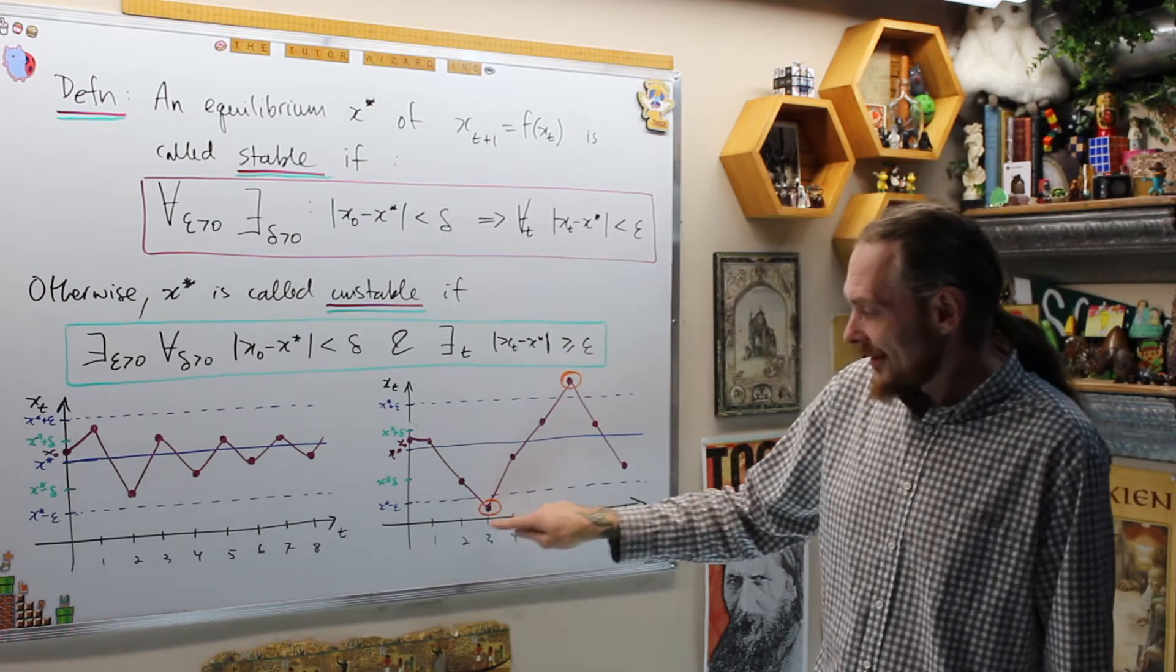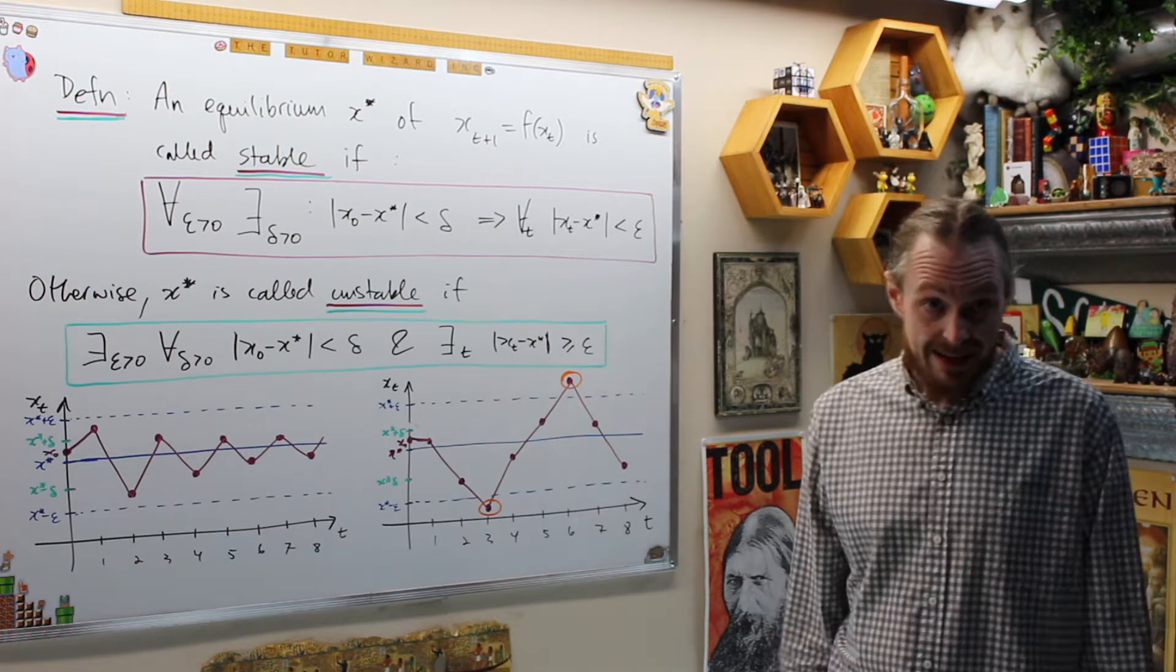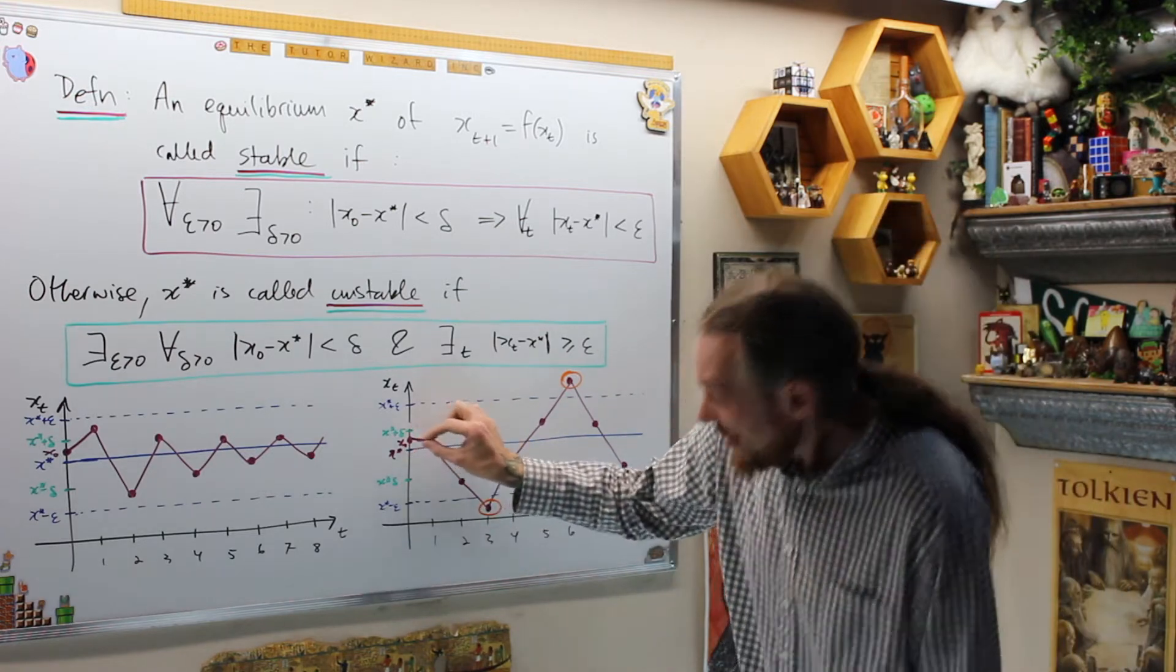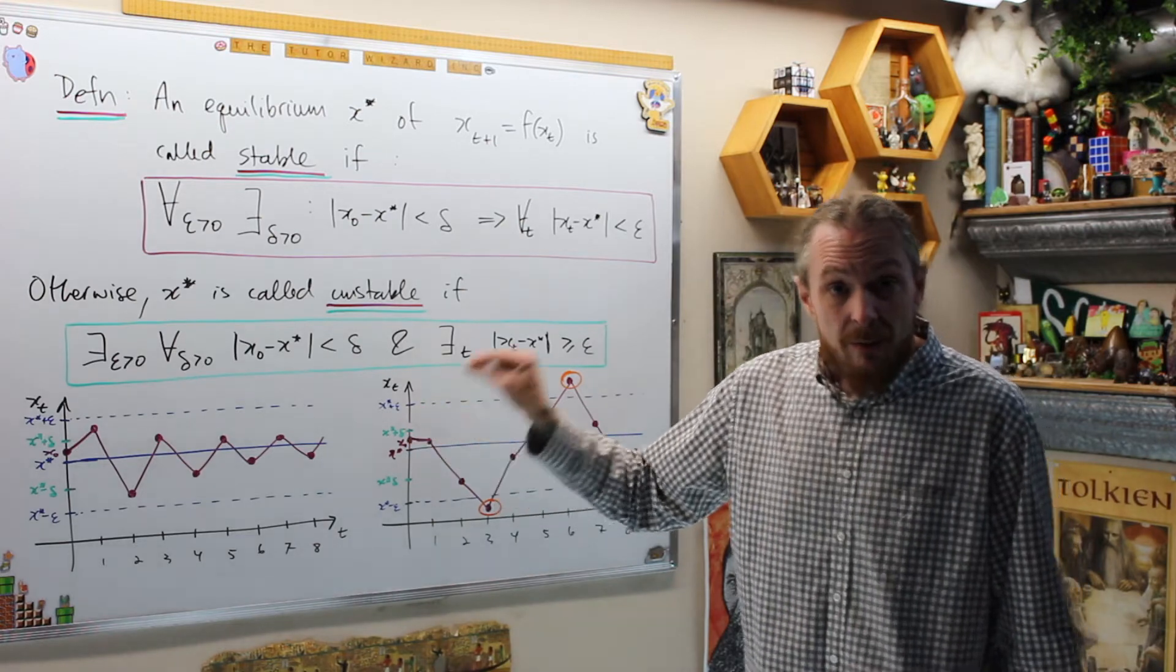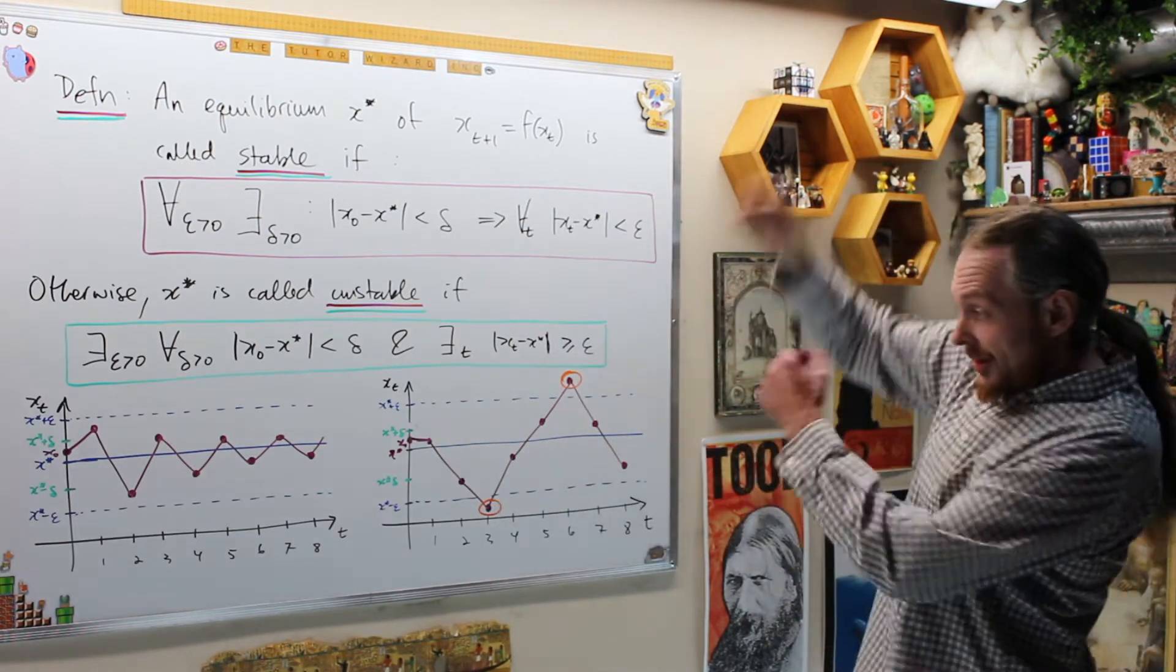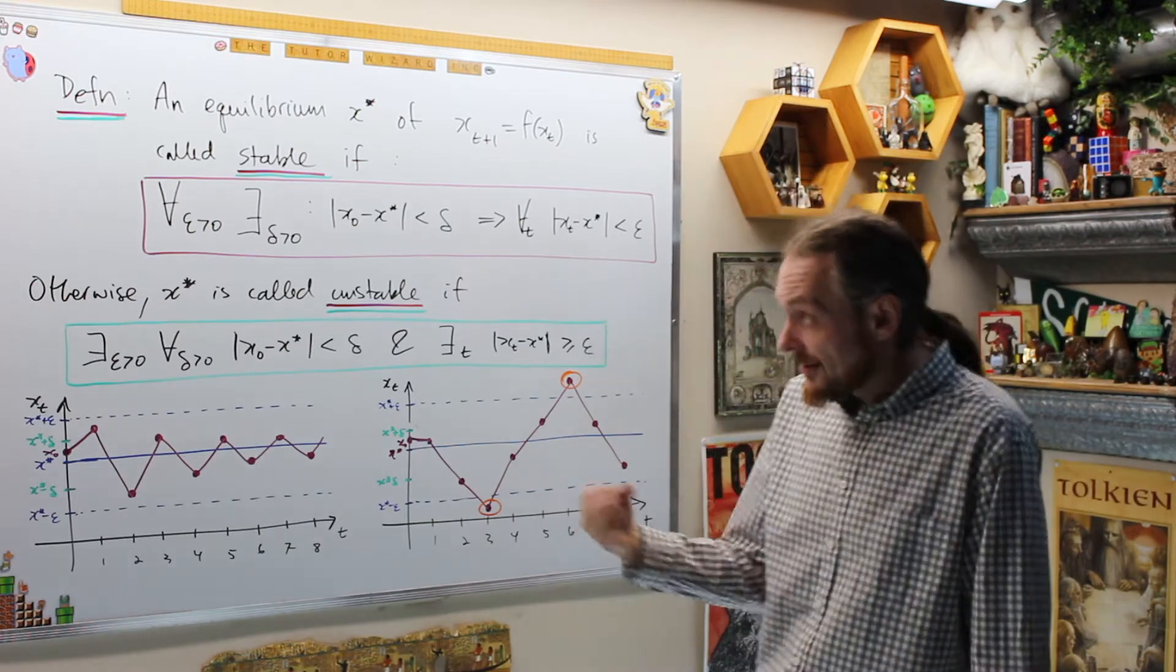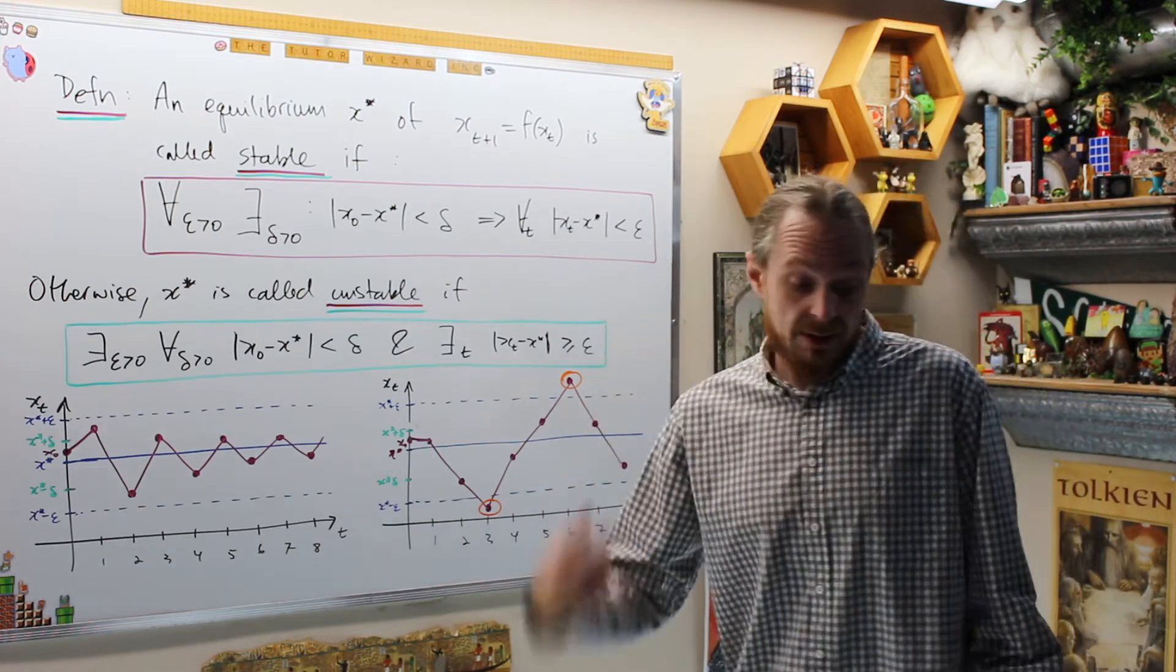Where the distance between x_t and the equilibrium is larger than epsilon, so they'll be stuck outside once I circled in orange are the bad guys. So regardless now, you're unstable if, regardless of how close I start to the equilibrium, over time there's values that will get larger and larger away from the equilibrium. That's unstable. Let's do the next definition.